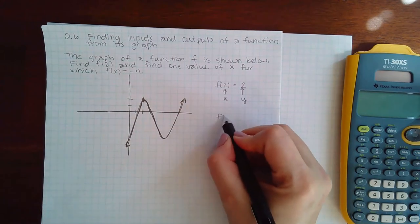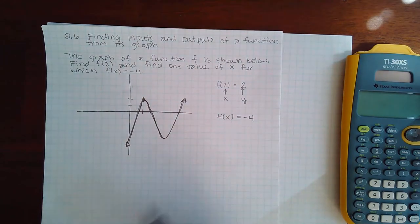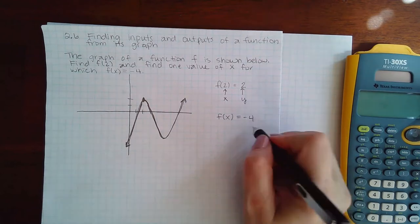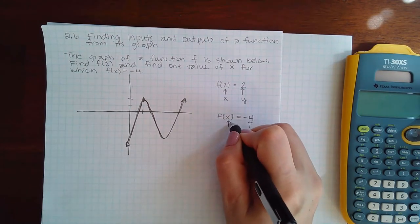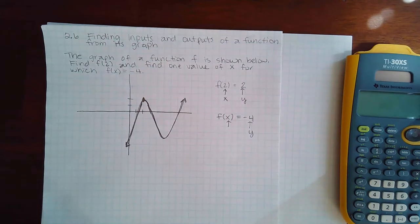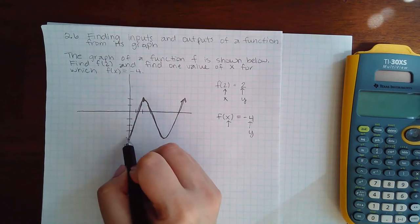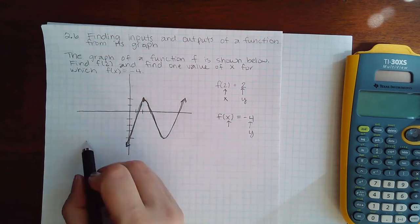Now for the information they gave me for the second situation is f of x equals negative 4. That means that this time they've given me the y value and they're asking me what is the corresponding x value. So I'm going to go to the y value of negative 4: 1, 2, 3, 4, and I'm going to span across till I get to the graph.